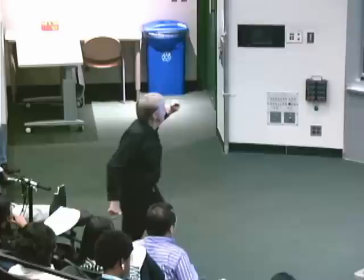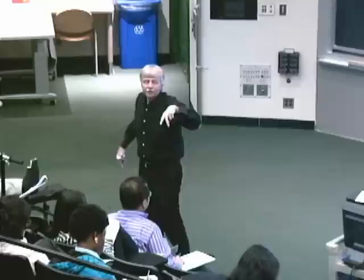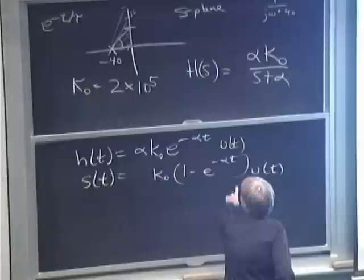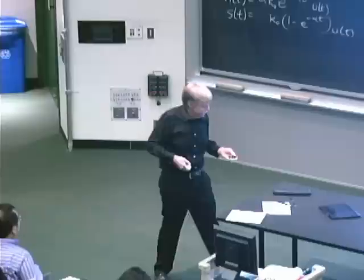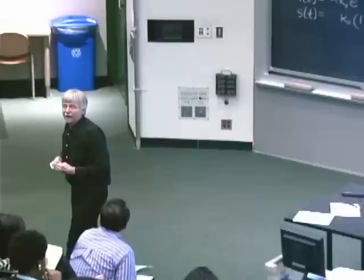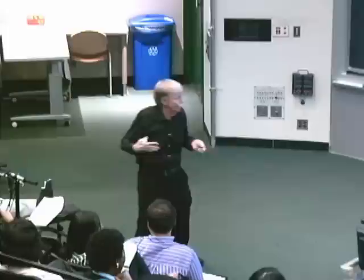The time constant tau = 1/alpha = 1/40 second, meaning about 40 things per second. That's not computation speed — it's pretty slow. We'd like to improve that, and one way is by using feedback. Instead of using the op-amp straight out of the package, we put it in a feedback loop.